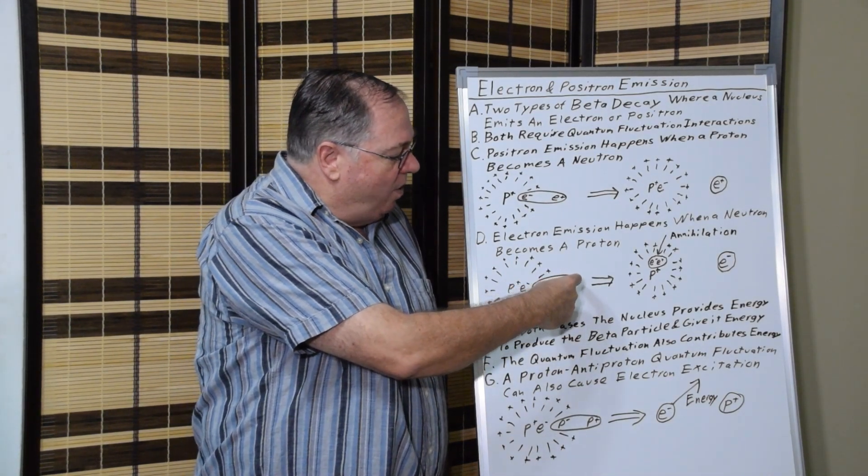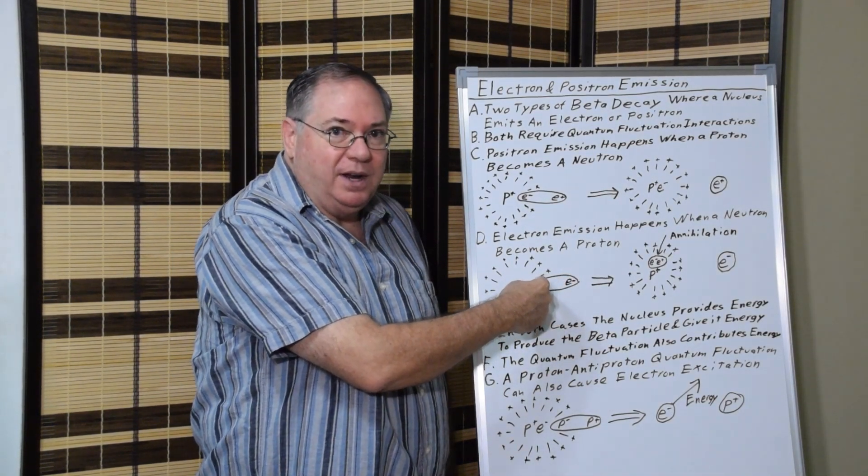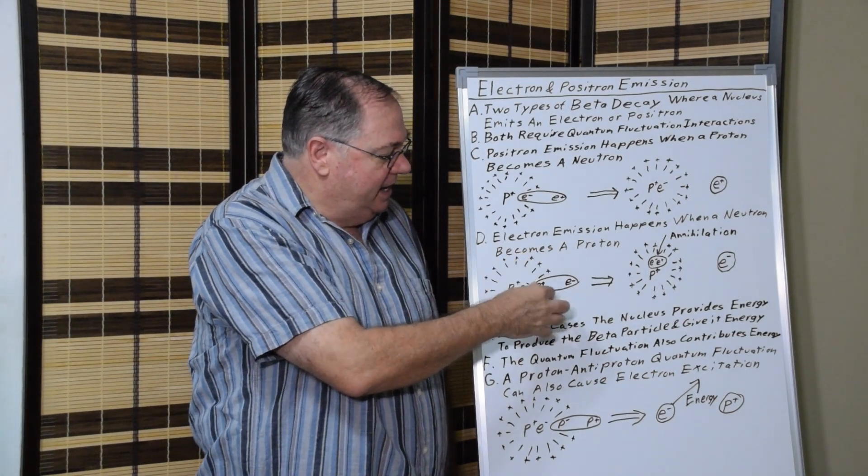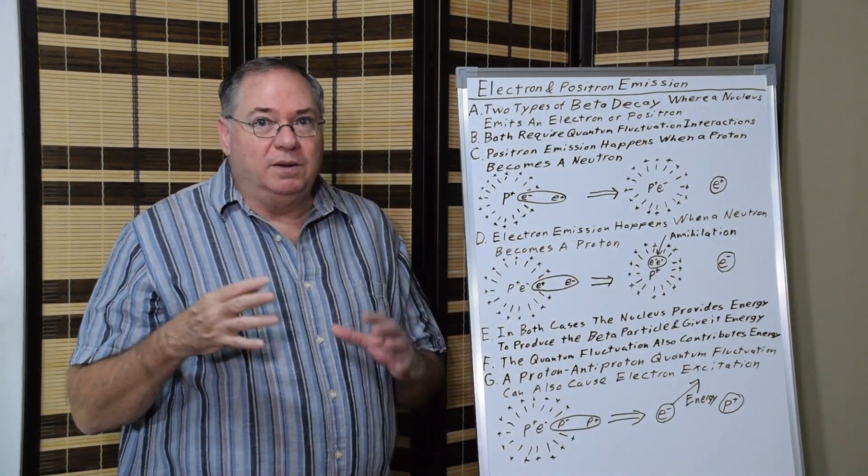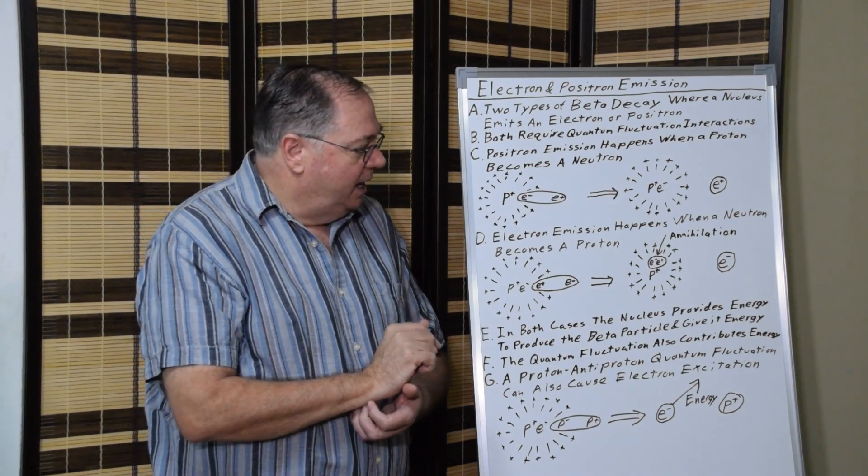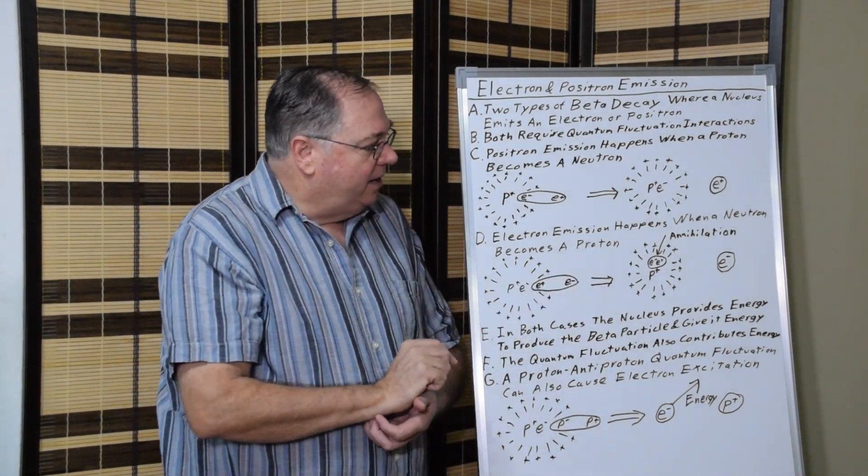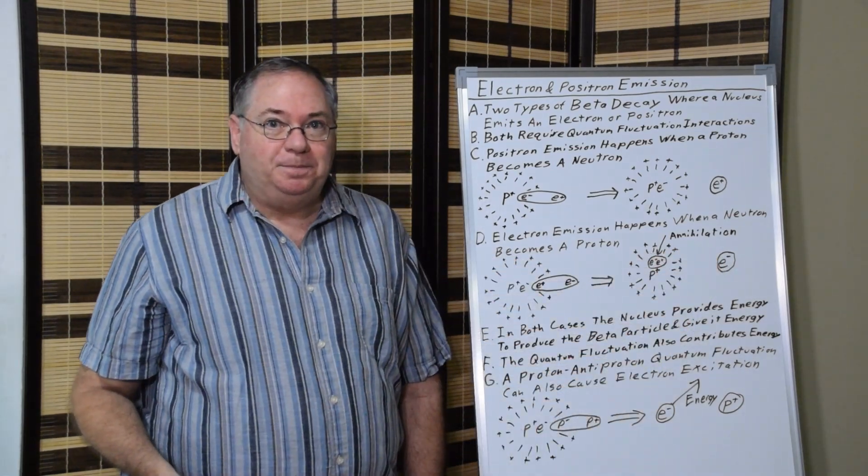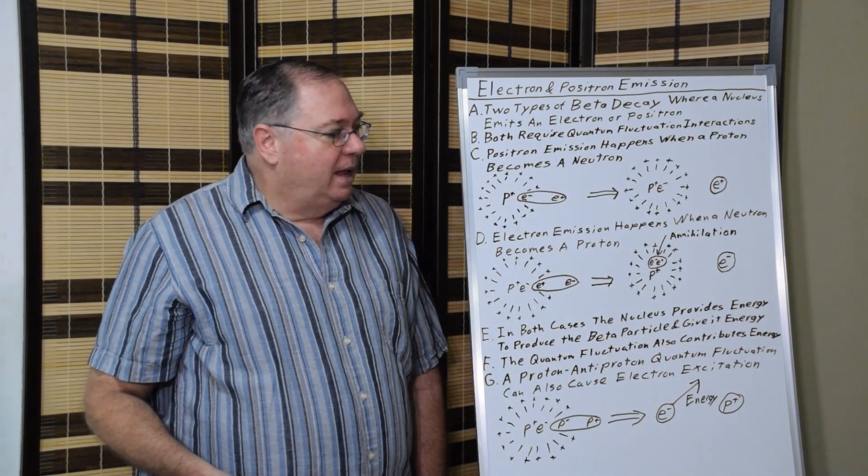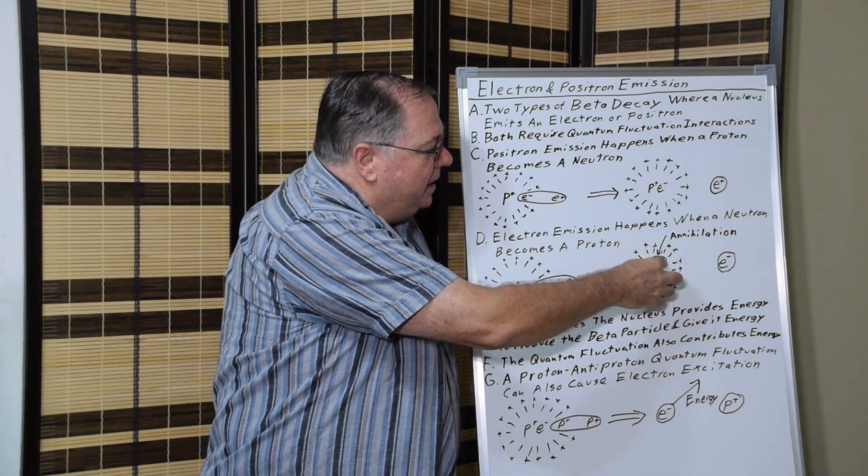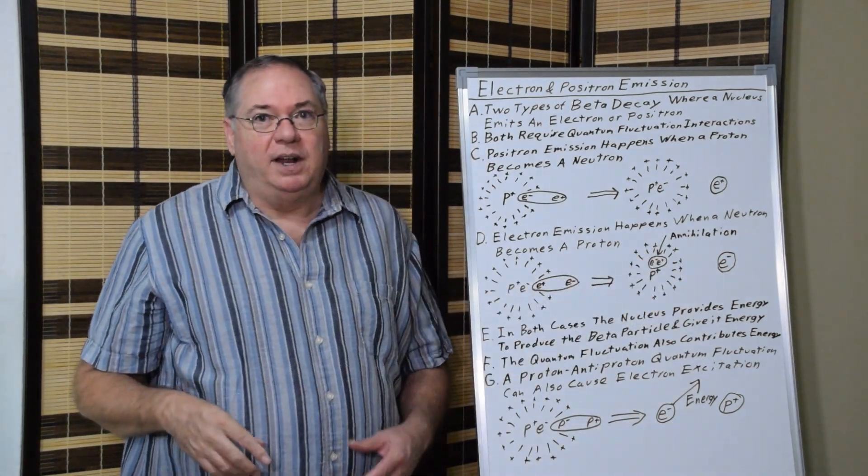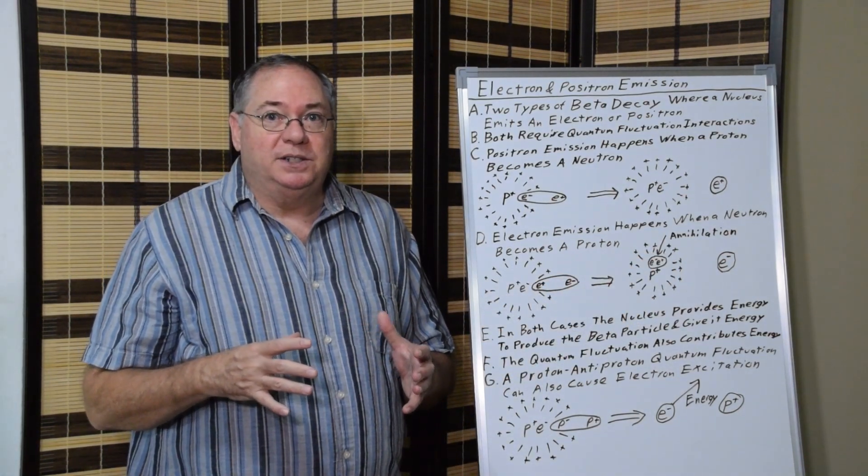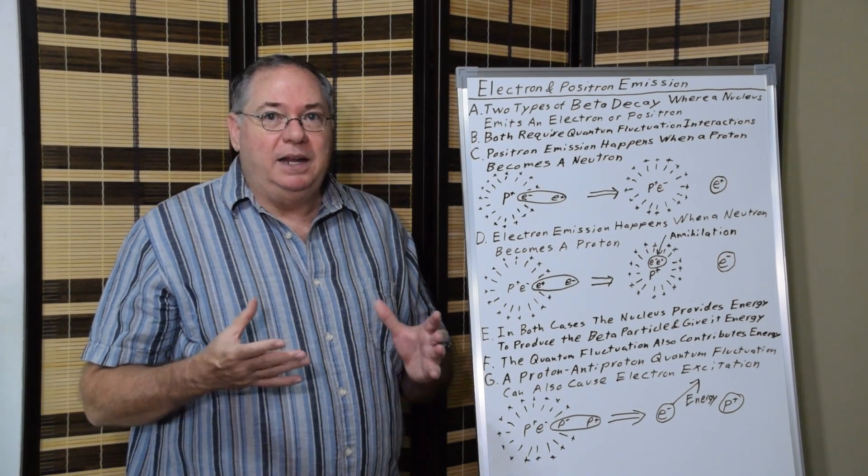We have a quantum fluctuation where the positron is inside the neutron's wall of quantum fluctuations and an electron outside, and then the electron becomes free when it escapes. And the positron and the electron that are inside the proton shell annihilate, leaving just a proton.